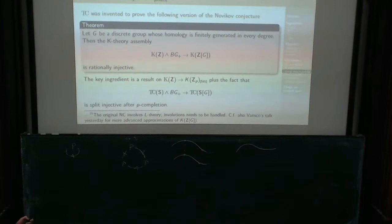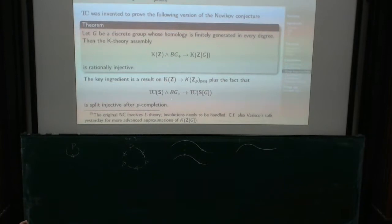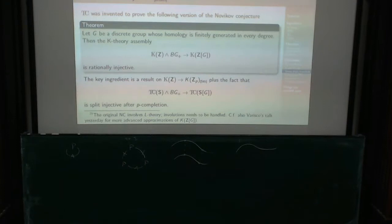Two things that go into the proof I want to highlight. There's a result by Suslin that says something about how the integers fit in the P-adic integers. And then a concrete calculation showing on the TC side that the corresponding assembly map splits after P-completion. And then you draw the diagram — Holger Reich wrote down a very nice diagram — and then you're done.